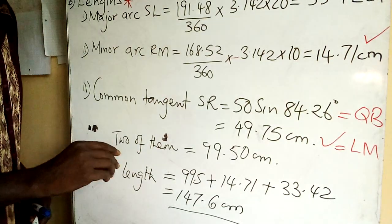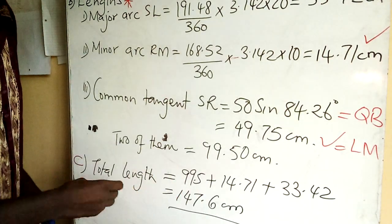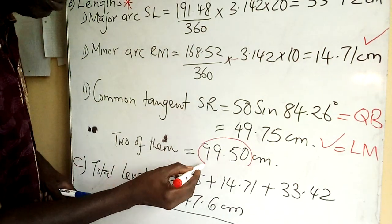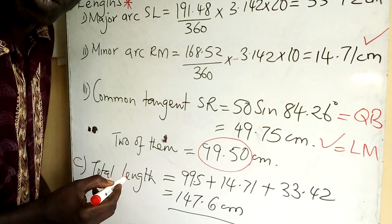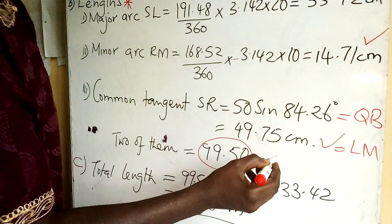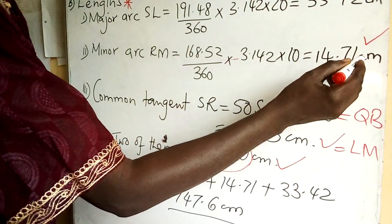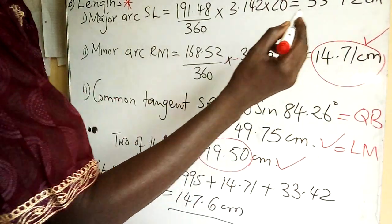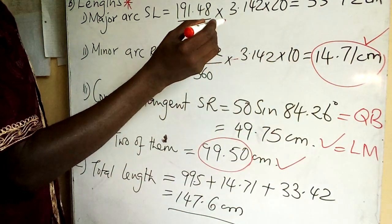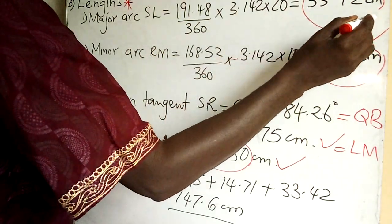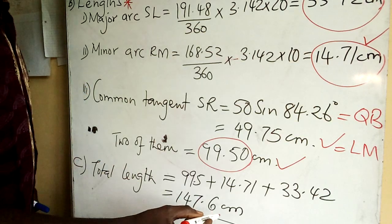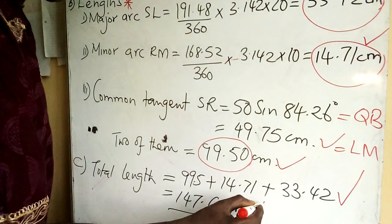Now part C — total length. The total is the two common tangents (99.50) plus 14.71 (the arc length on the right hand side) plus 33.42 (the arc length on the left hand side). Add them all to get the total perimeter length.